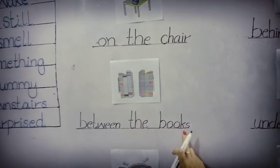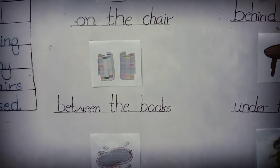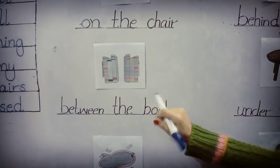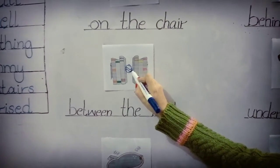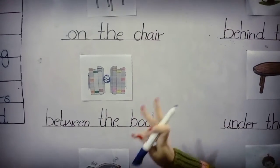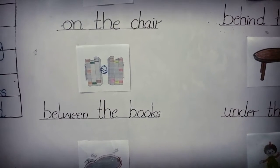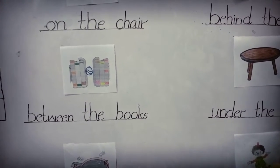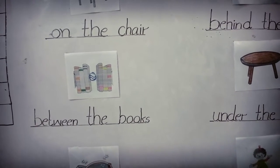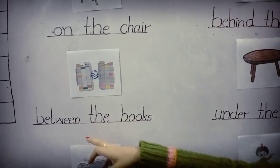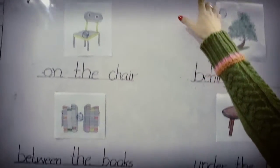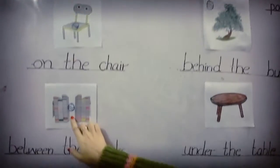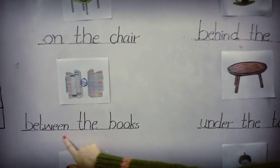The next is 'between the books.' Between means darmiyan — books ke darmiyan mein ball draw karna hai. We use 'between' for two things. Means do tables ke darmiyan mein ek chair rakh de, do pencils rakhein, us ke darmiyan mein koi eraser rakh de — between the things. Between the books means books ke darmiyan mein aap ne ball draw karna hai.